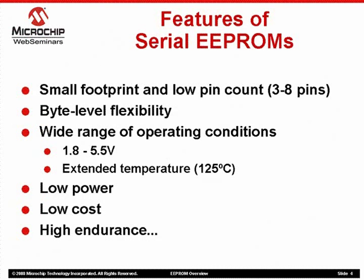Before we get into the differences among the EEPROM buses, let's talk about some features and advantages that are common to all products, regardless of the bus. First, Serial EEPROMs have a low pin count, typically 8 pins, and are available in very small packages. There are also 5- and 6-pin options, and we have recently introduced 3-pin EEPROMs. Second, EEPROMs can both write and read a byte at a time, in contrast to flash technologies that are typically limited to sector operations. EEPROMs are available in a wide temperature and voltage range. Most Microchip EEPROMs are available in 1.8-volt options, which is excellent for battery applications.